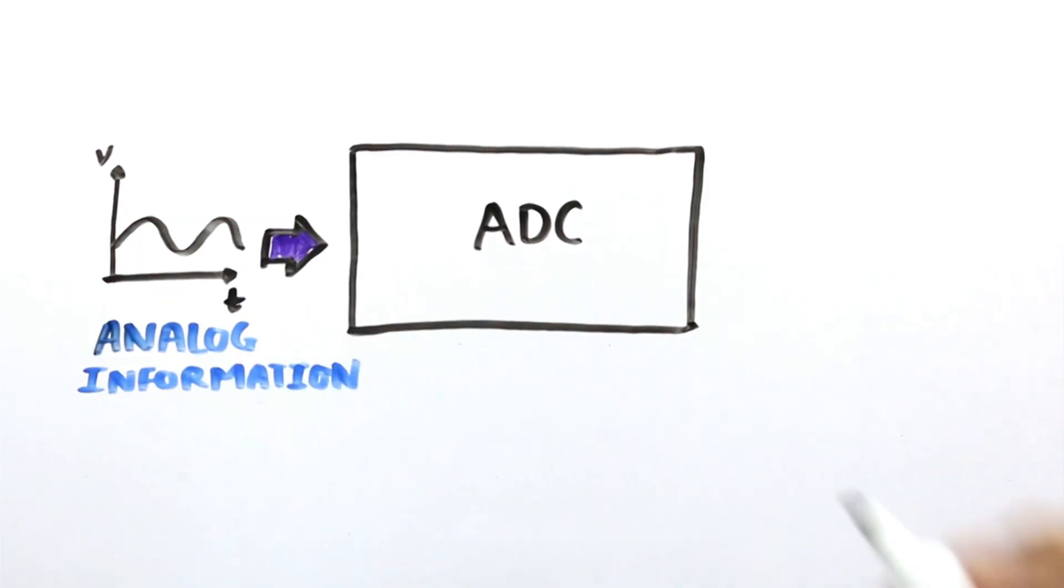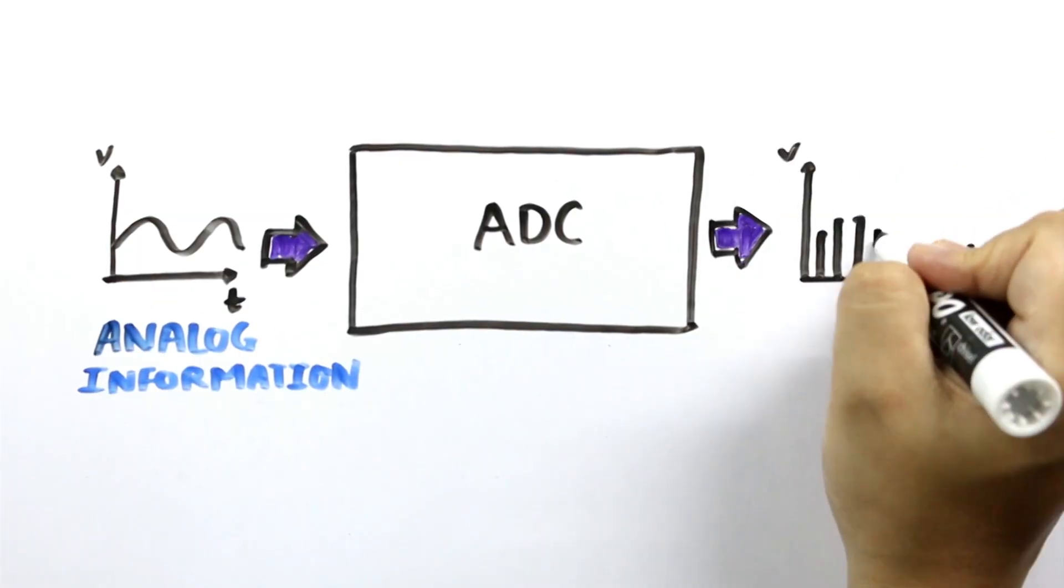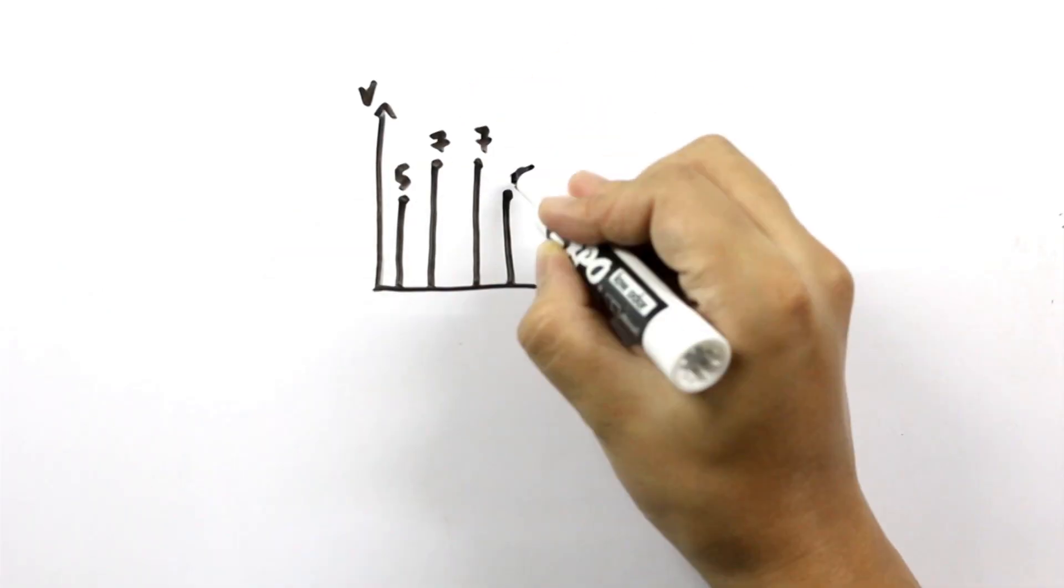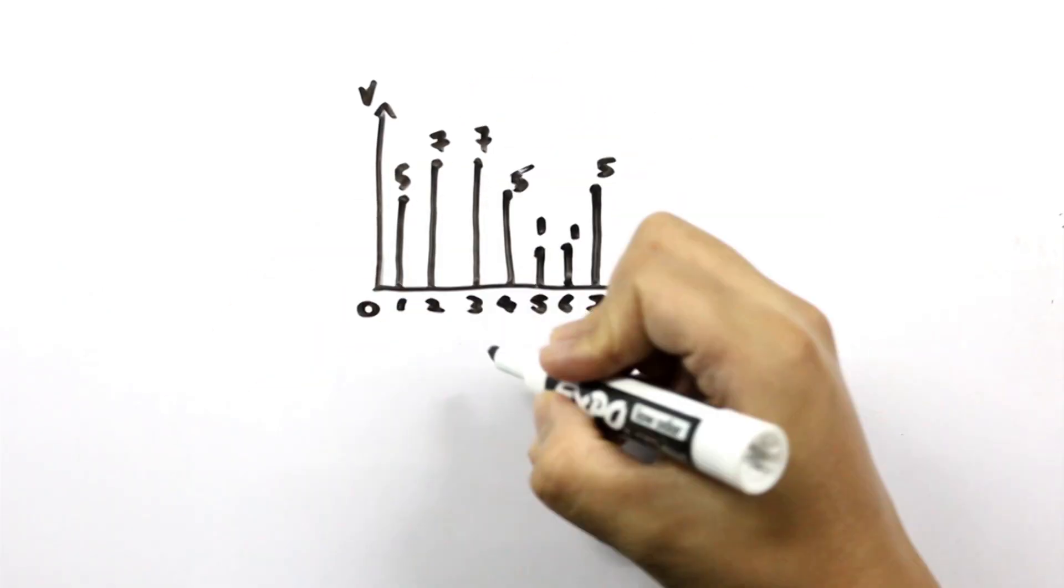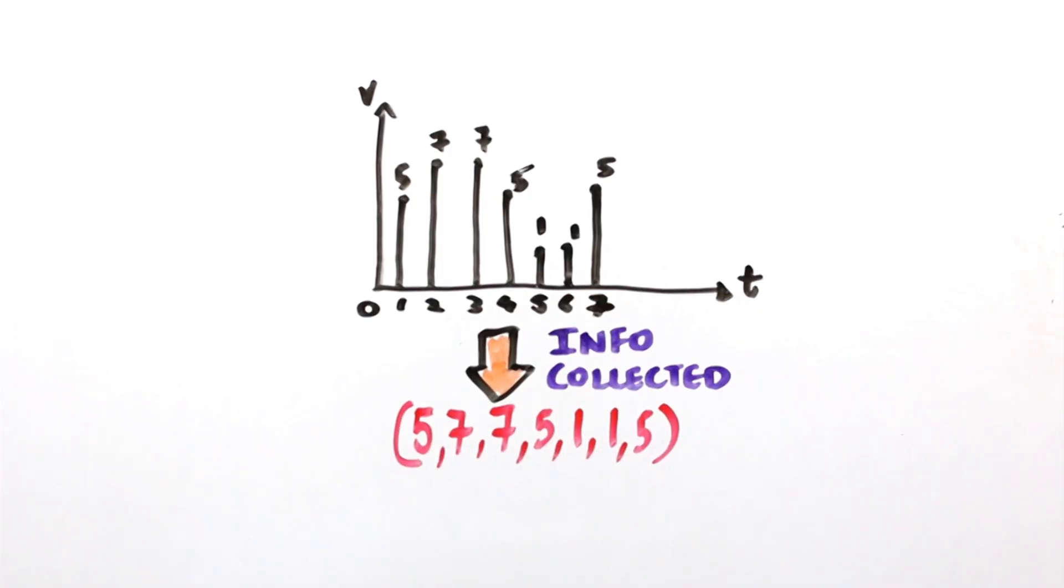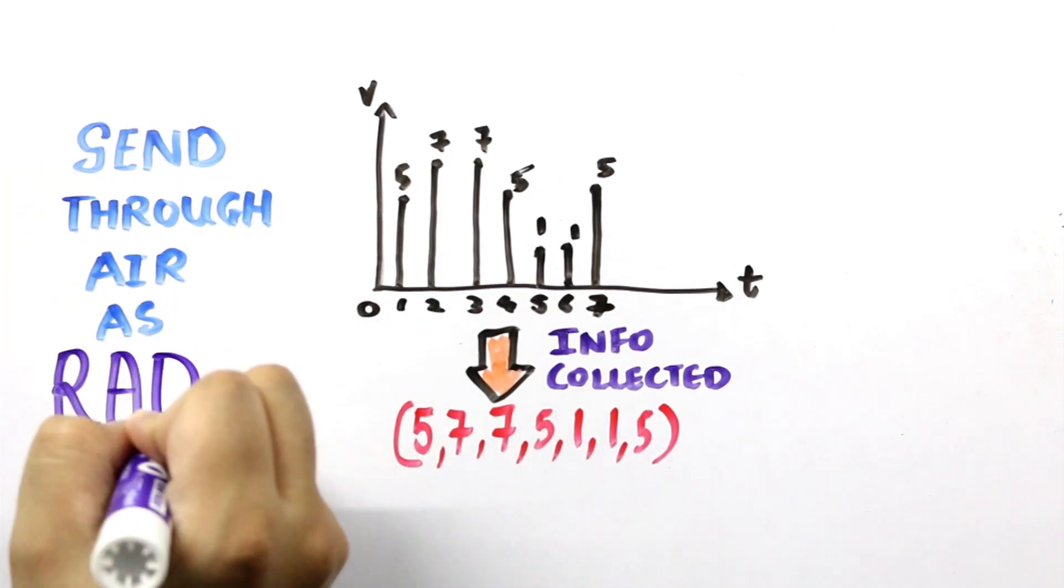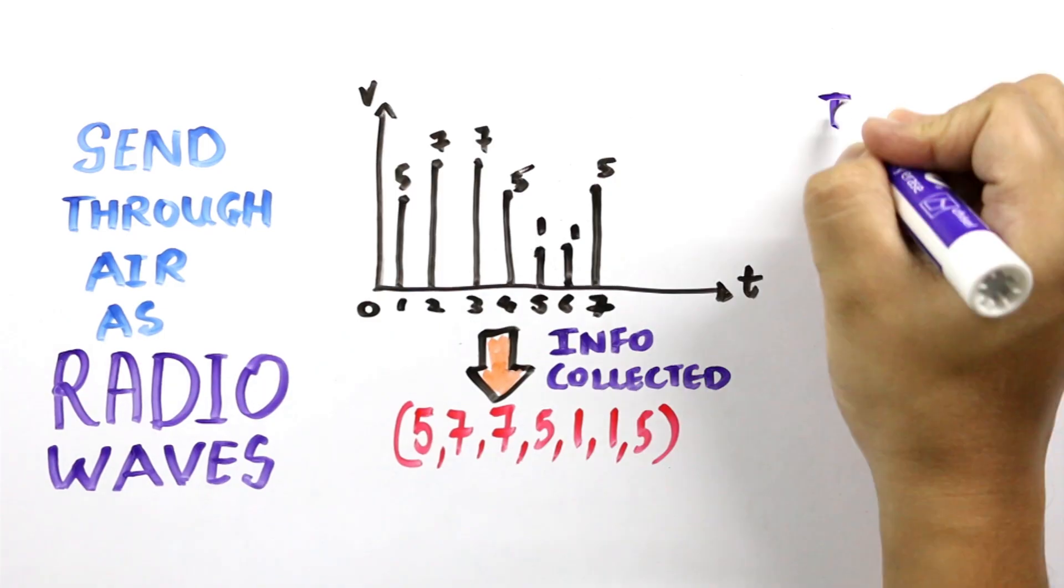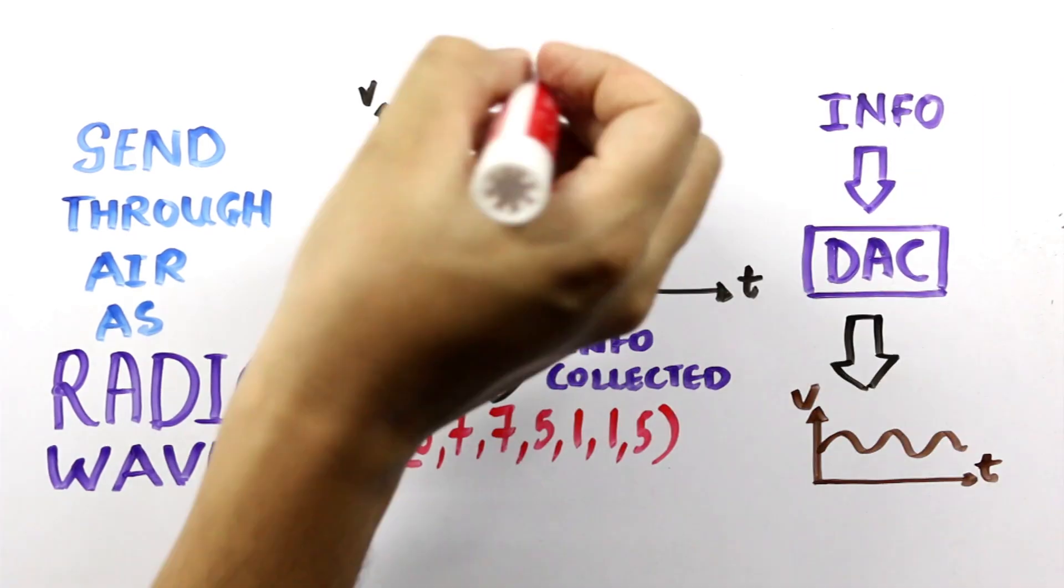If each bar represents one second of time, we can represent this chart by numbers. So by sampling the sound waves once per second, we have successfully turned our analog sound wave into digital information. We could send those numbers through the air as radio waves to another phone, which would run the process in reverse and turn the numbers back into sound we could hear.